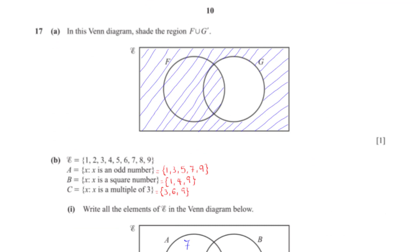In this Venn diagram, shade the region F union G prime. If F represents people who play football and G represents people who play golf, then F union G prime is the set of people who play football or who don't play golf. We shade the region for people who play football, then also shade the region for people who do not play golf.